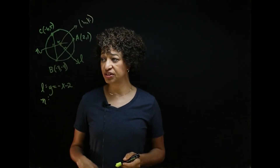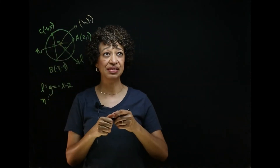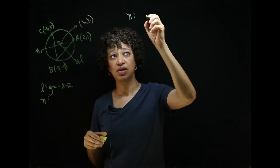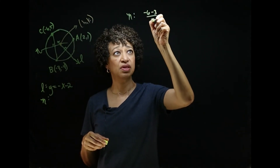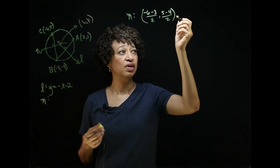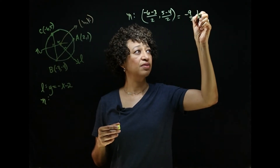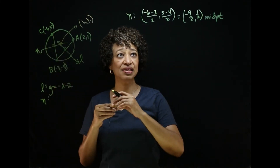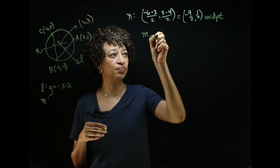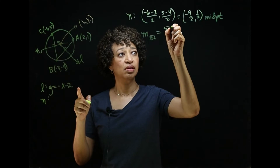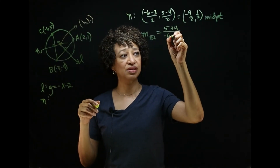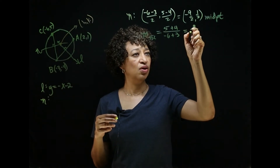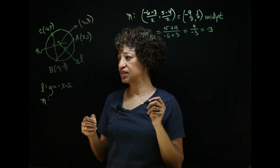Now we repeat that procedure to get the equation of line N, the perpendicular bisector of chord BC. Finding the midpoint of chord BC: negative six plus negative three over two, and five minus four over two — that gives us negative nine-halves, one-half as our midpoint. The slope of chord BC is y2 minus y1 over x2 minus x1, which gives us negative nine over three, or negative three.